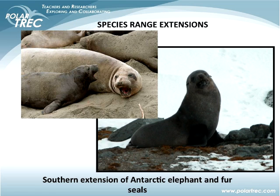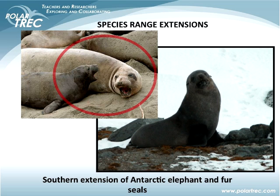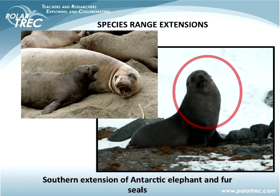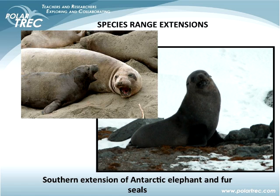Other seals are showing up in the area as it warms — the elephant seal and the Antarctic fur seal. The elephant seal can get up to several tons and the Antarctic fur seal is a ferocious little seal you don't want to get too close to. Both are typically found in slightly warmer places, but they're beginning to move down the peninsula as warming occurs, and elephant seals are now actually having babies and colonizing the area.